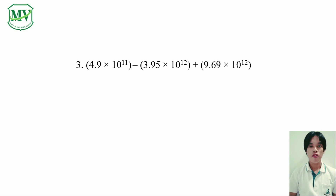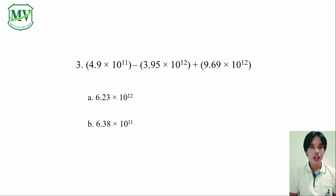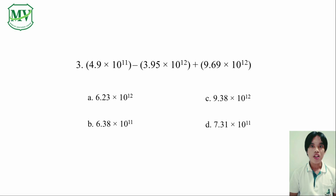Number 3: 4.9 x 10 raised to the power of 11, minus 3.95 x 10 raised to the power of 12, plus 9.69 x 10 raised to the power of 12. A: 6.23 x 10 raised to the power of 12. B: 6.38 x 10 raised to the power of 11. C: 9.38 x 10 raised to the power of 12. And D: 7.31 x 10 raised to the power of 11. This problem is pretty much similar to the previous one, so we can just follow the steps from the last problem.